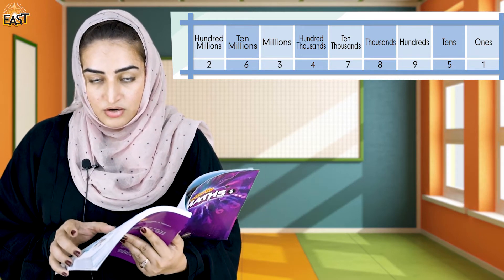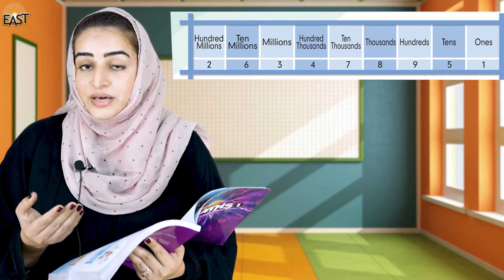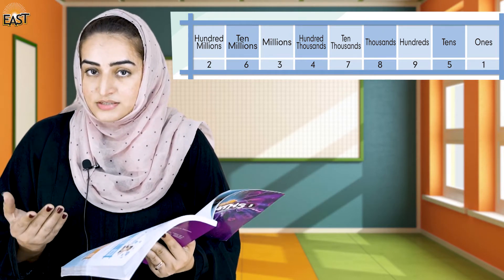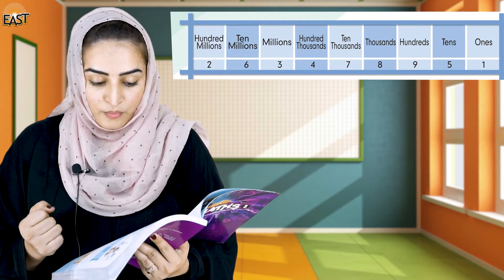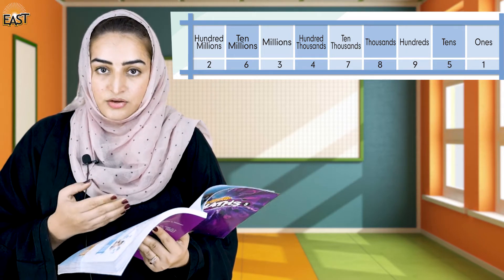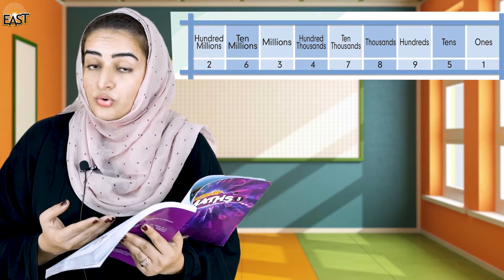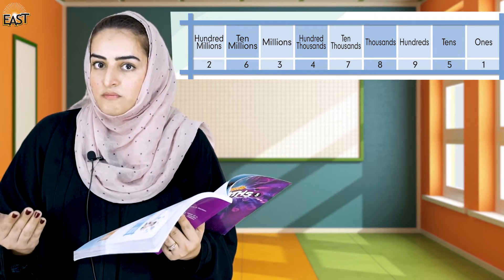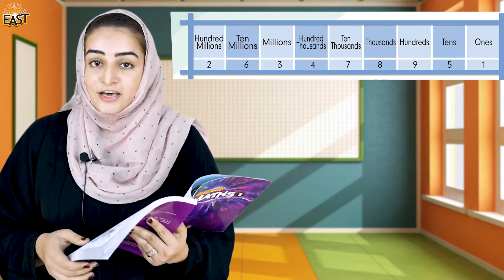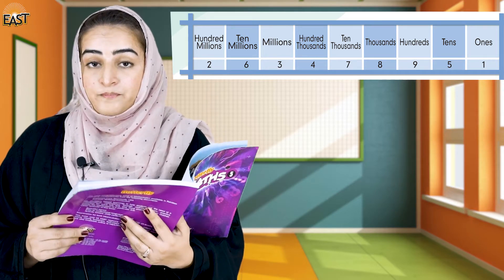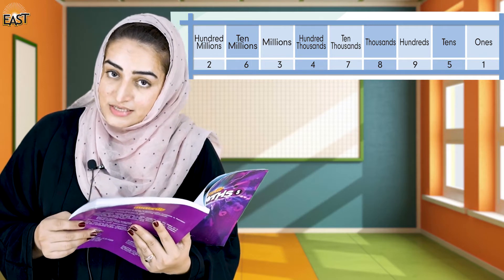What we have just done is written the number in standard form. Standard form means we simply read the number as it is. Now, how can we write it in expanded form? We have read about this in previous classes.